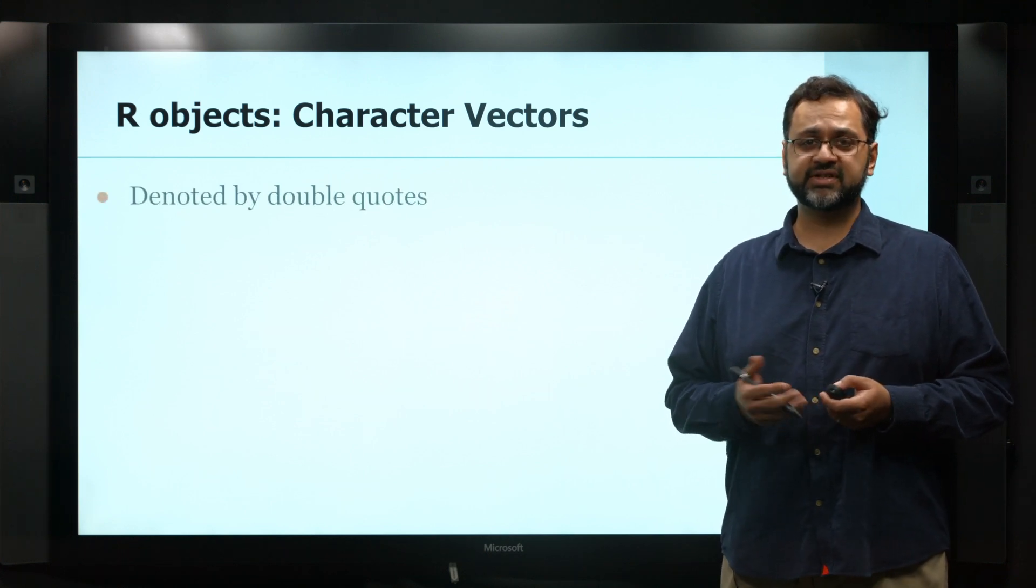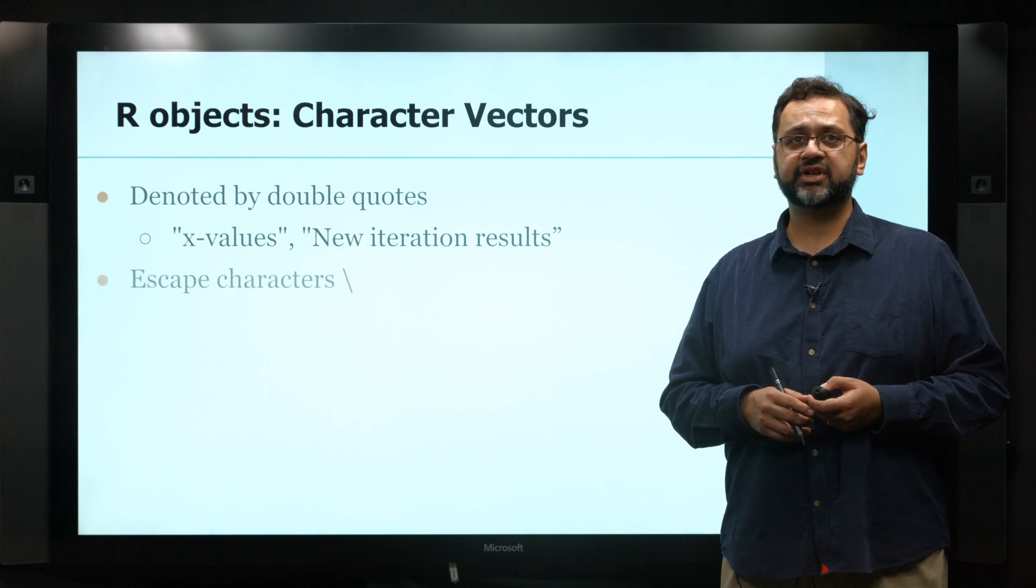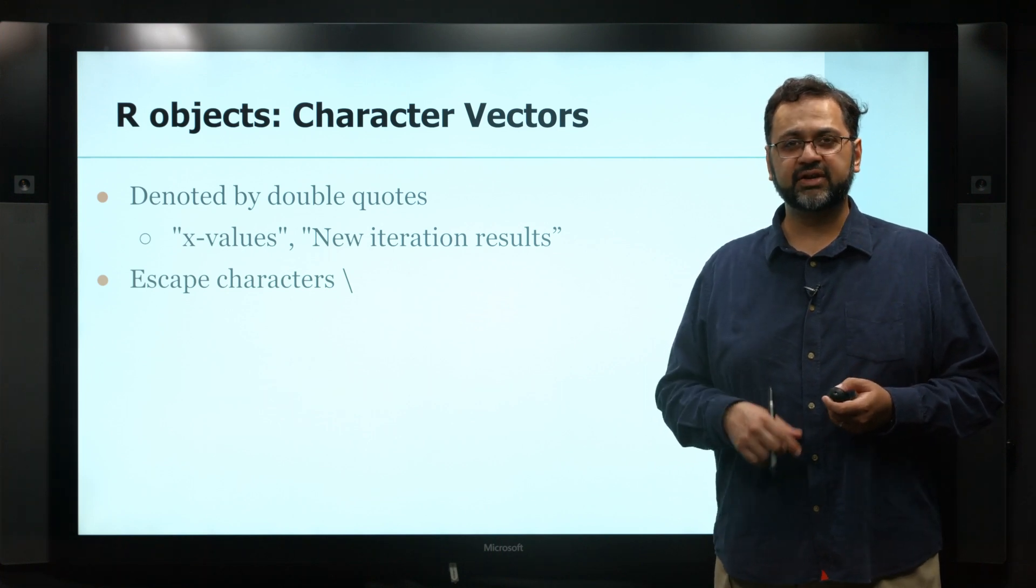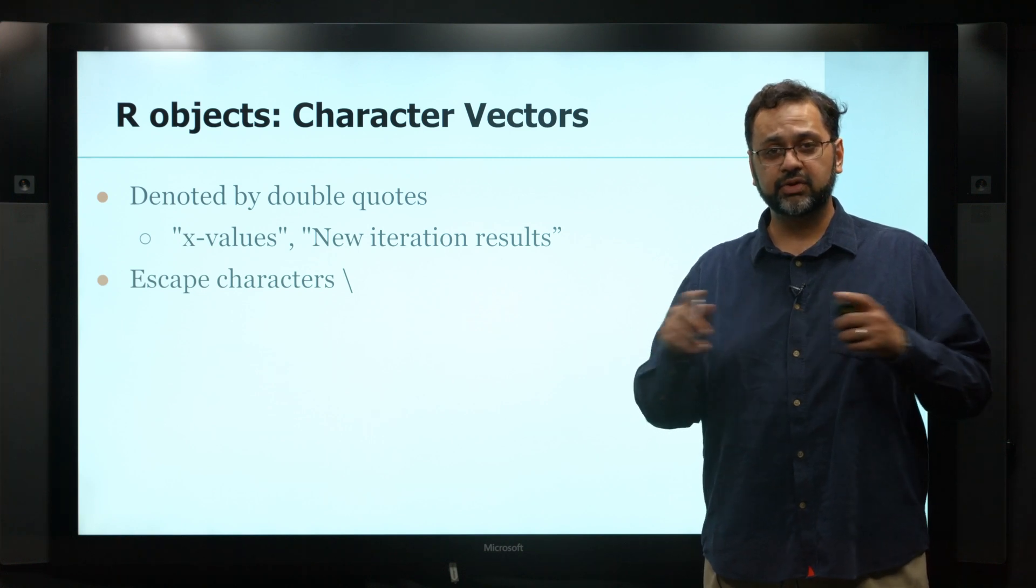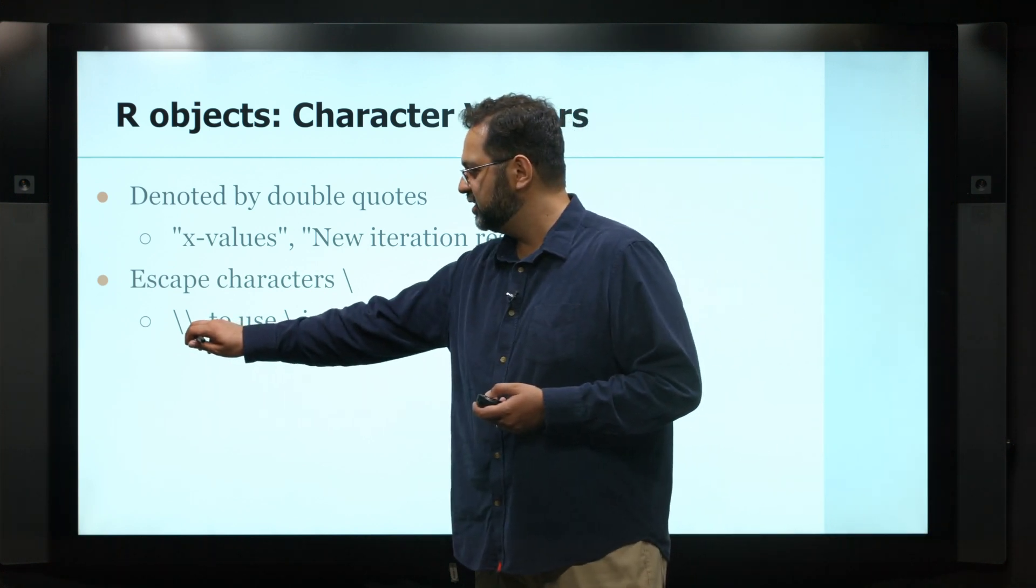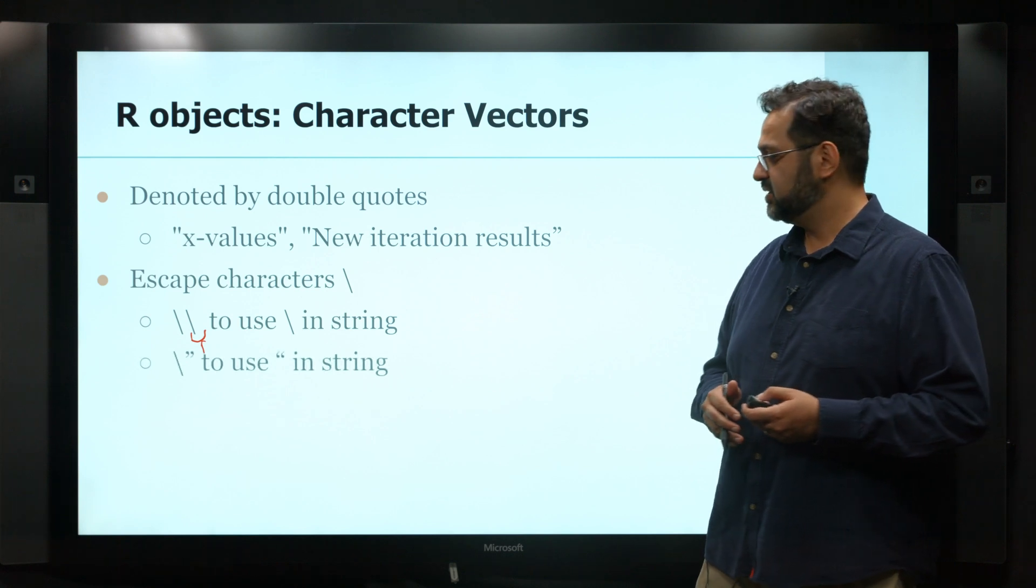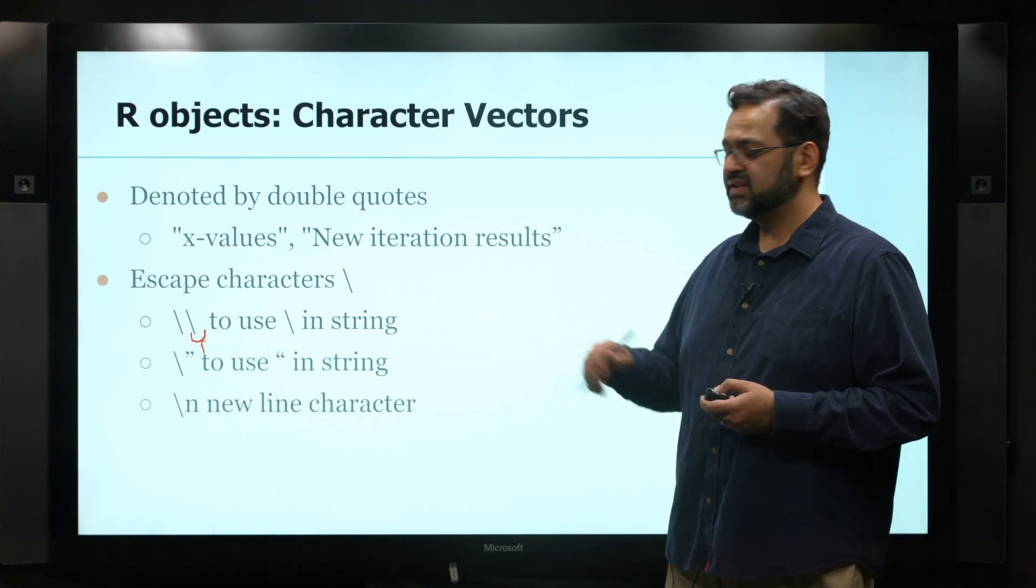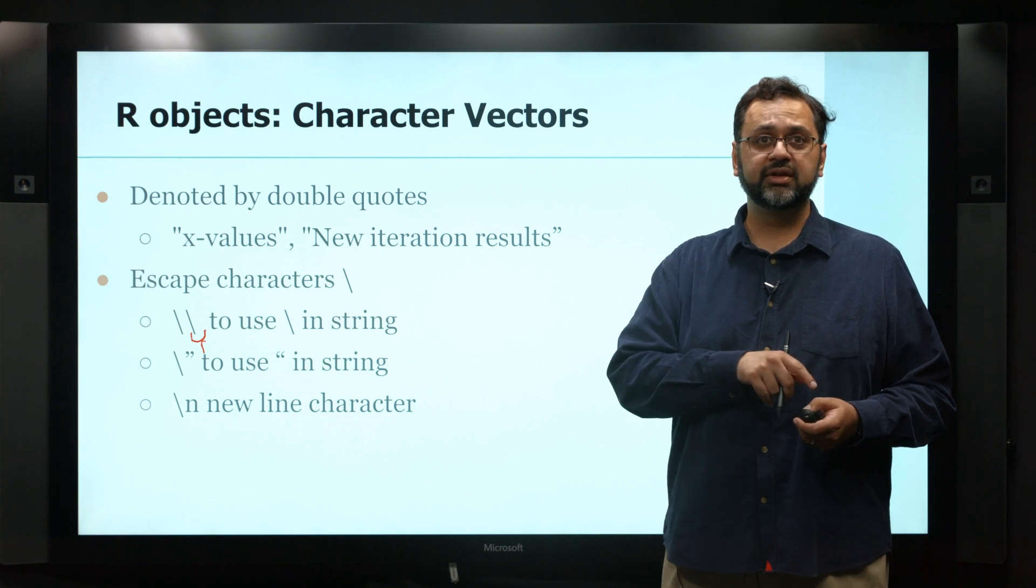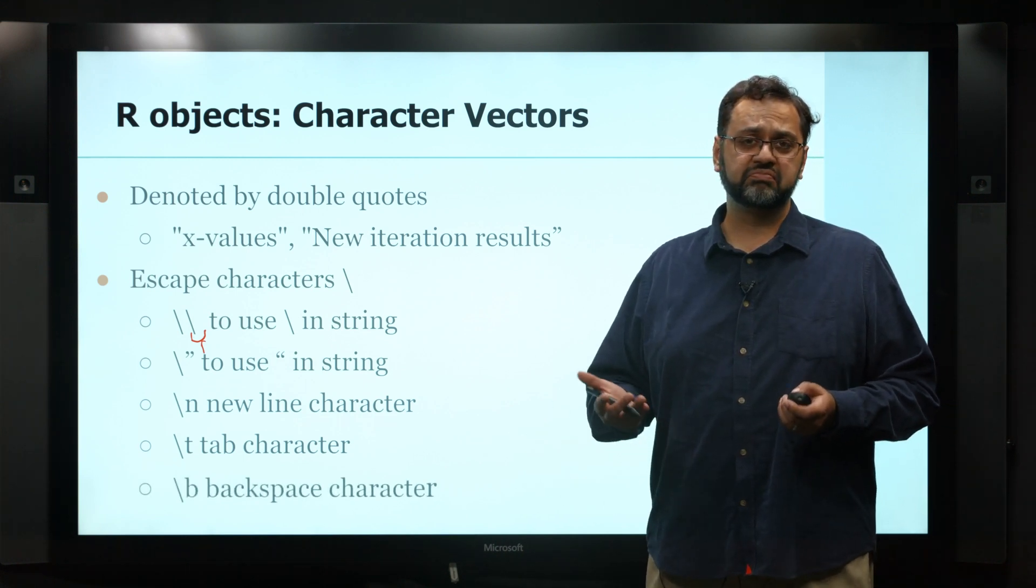Character vectors require quotes around them. You might want to put a special symbol inside a character vector - for example, what if you want to put a quote inside your word? Then you have to use escape characters. These escape characters tell R to use this phrase or term as it is, not the R meaning of it. The slash N means a new line character, as if you're pressing enter. You can also have tab characters. There's also a backspace character.